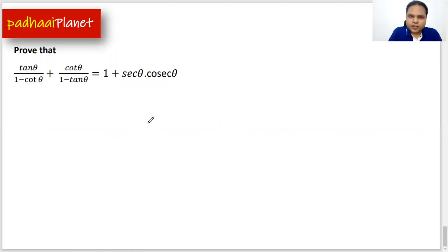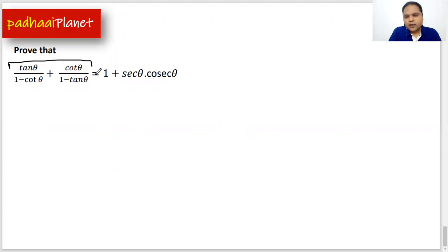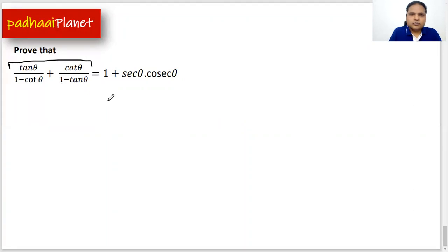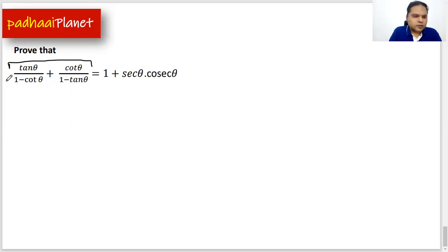In this question also, you'll observe that we will end up doing 90 to 95% simplification and just very, very little trigonometry. So before I take much of your time, let's quickly start.